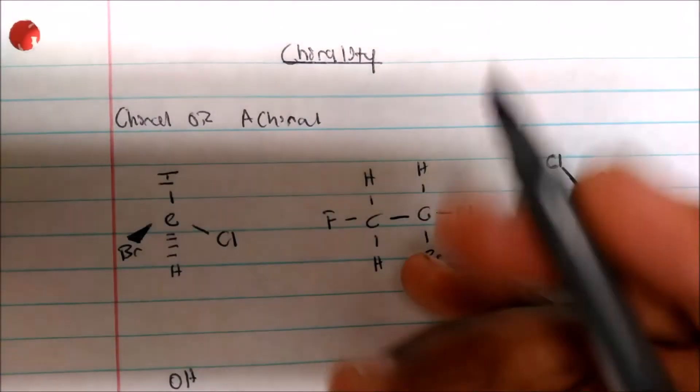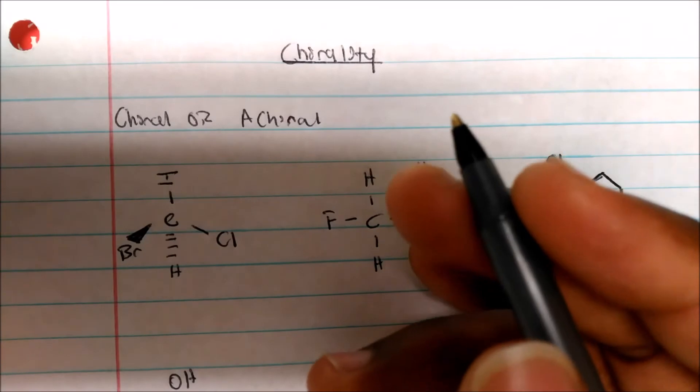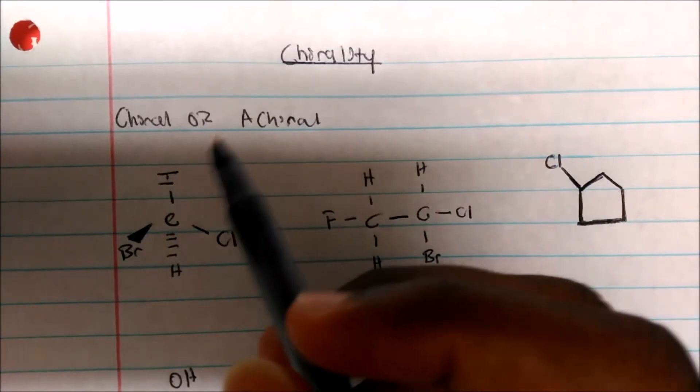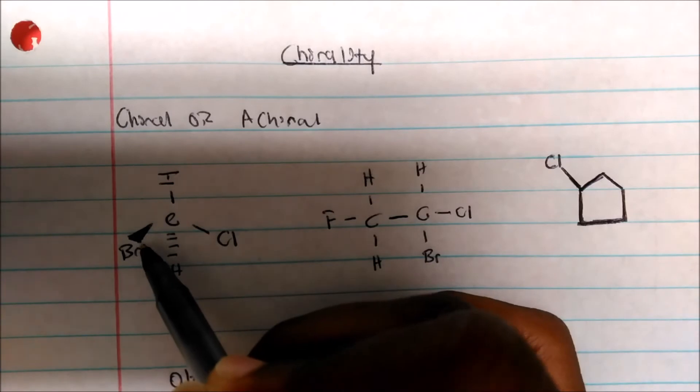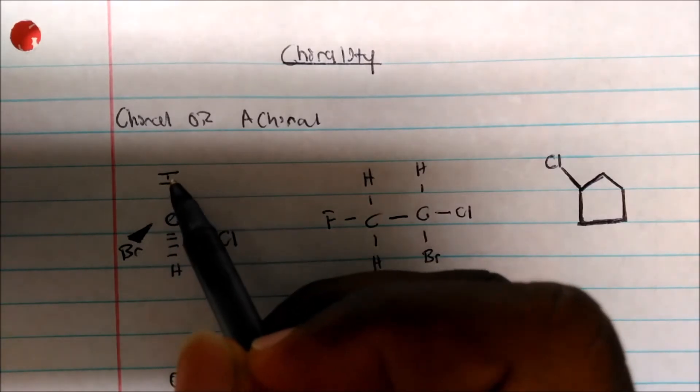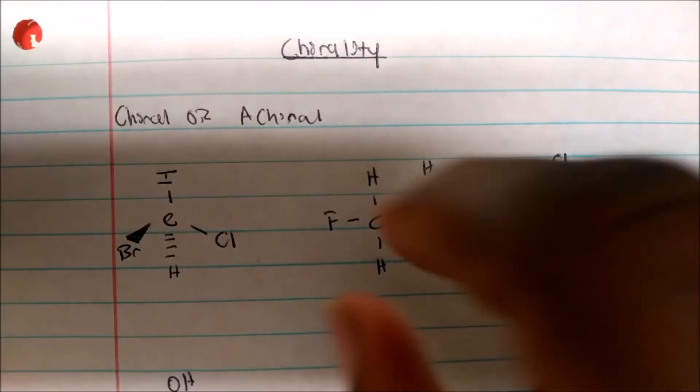Looking at this molecule, will this be chiral? Yes. Because you can think of it as I could flip this bromine over here and flip this chlorine over here. The iodide stays in the same position. It's kind of turning the molecule.